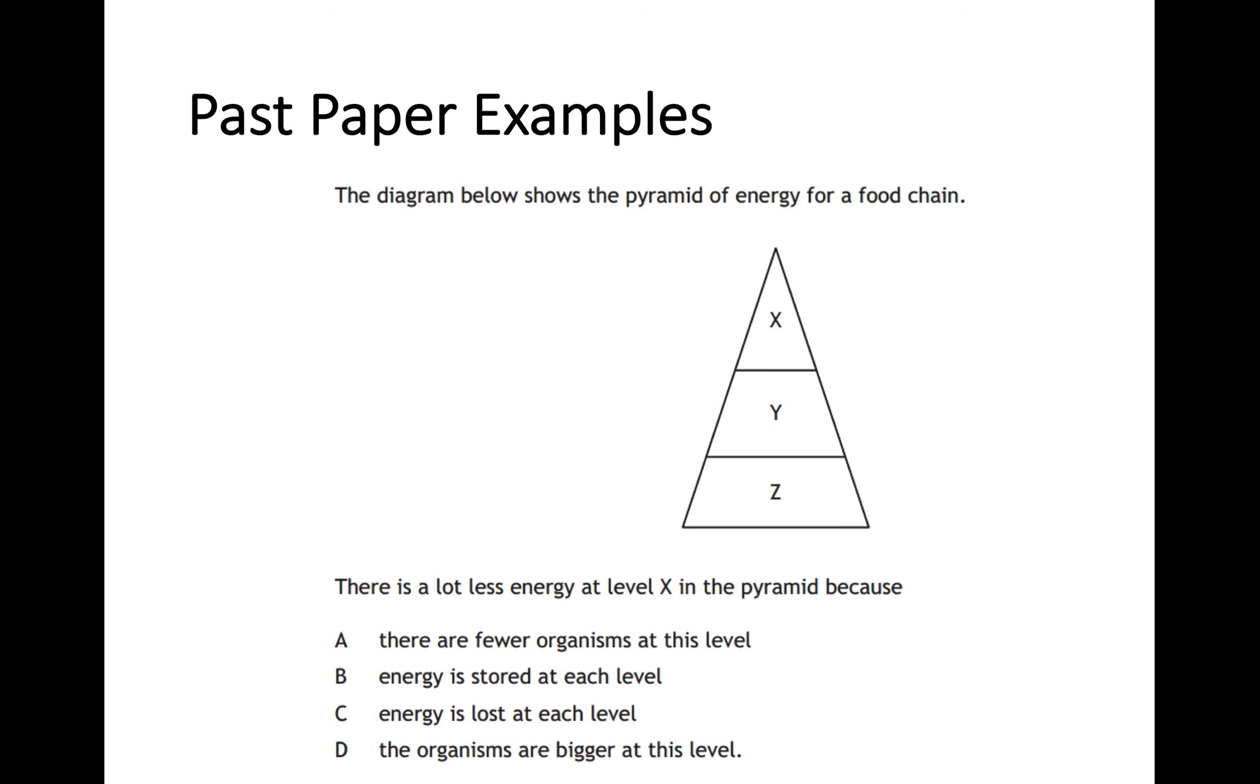And finally, this other multiple choice question on pyramids. There's a pyramid shape on the pyramid of energy. There's a lot less energy at level X, the top of the pyramid, because: A, there are fewer organisms at this level; B, energy is stored at each level; C, energy is lost at each level; or D, the organisms are bigger at this level. Hopefully you should remember that energy has got nothing to do with there being fewer organisms, or that the organisms are bigger, or energy being stored. You have to remember the whole point of this key area is that energy is lost at each level of the pyramid. The reason why there is more energy at Z than there is at X is because, as you go from Z to Y to X, you are losing energy each time.